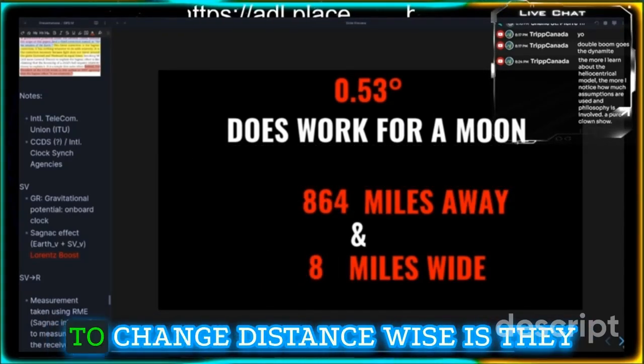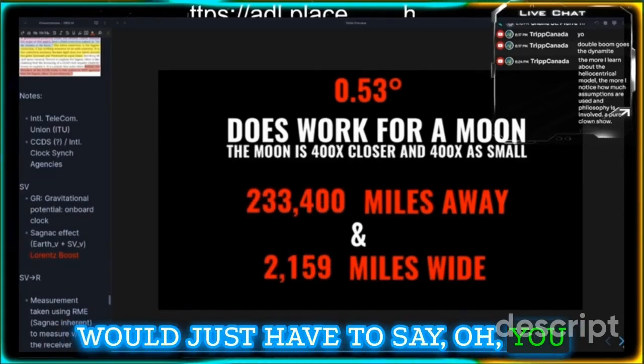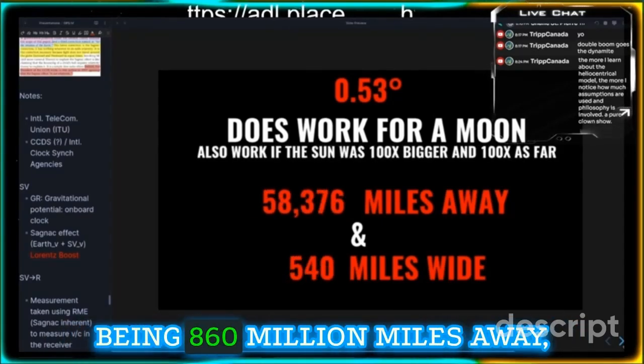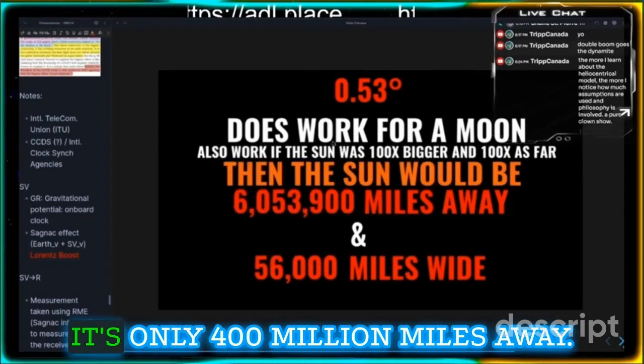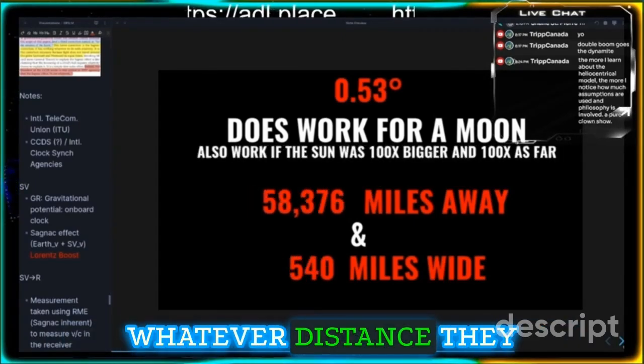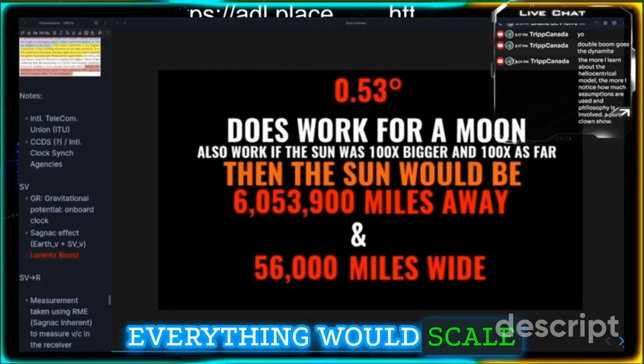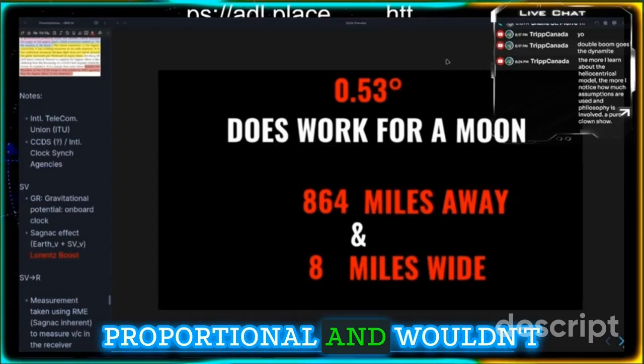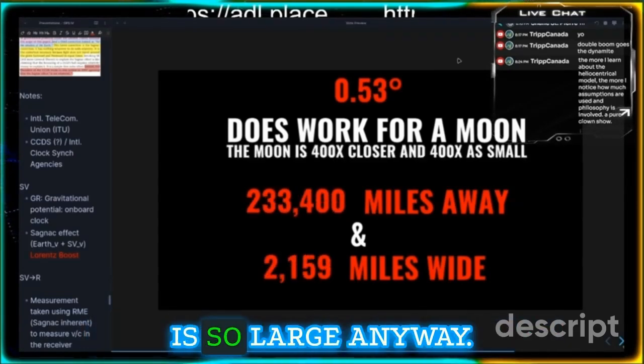All they would have to change distance-wise is they would just have to say, instead of Saturn being 860 million miles away, it's only 400 million miles away. We just didn't know. Whatever distance they would change it to, everything would scale proportional.